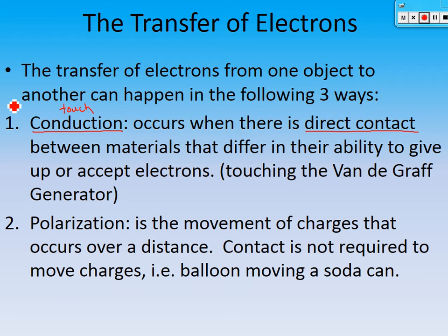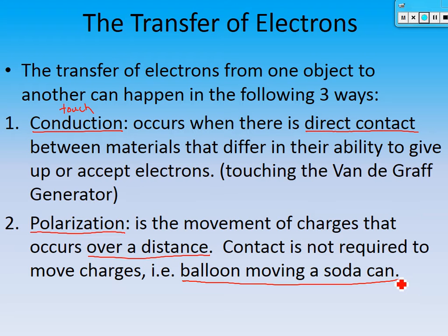A second way electrons can move is called polarization. Polarization is the movement of charges that occurs over a distance — you don't have to physically touch the other object. Contact is not required. We're going to experiment with this today: you'll take a balloon and move a soda can without even touching it. That's polarization — the movement of charges over a distance.